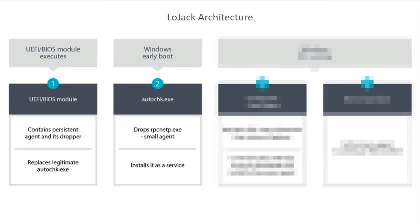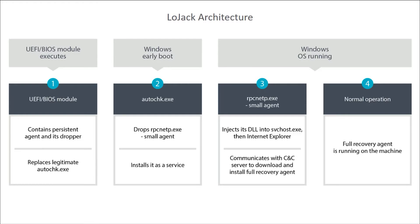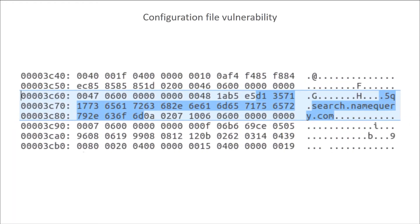Here's a technical overview of how LoJack ensures its persistence. First, the UEFI module which comes pre-installed is executed when the computer is powered on, but before Windows starts. It will copy a simple downloader called the small agent onto the Windows partition. When Windows starts, the small agent is launched and connects to a remote server to download the full agent and executes it. The full agent contains the implementation of all the LoJack anti-theft features. The powerful persistence mechanism makes perfect sense for an anti-theft solution, but it would also be very useful for an attacker — which is what happened.